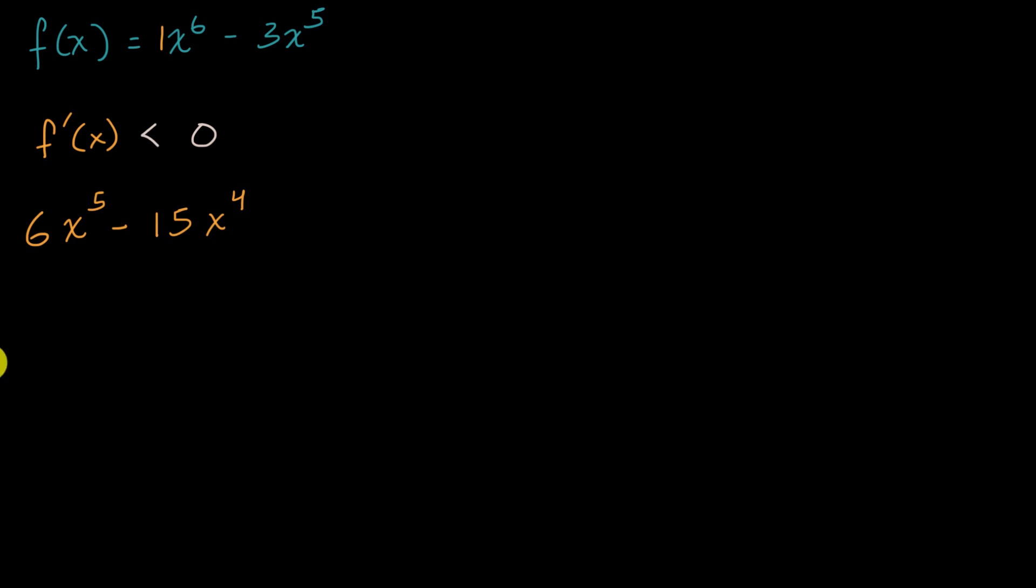And we need to figure out over what intervals is this going to be less than zero. Now let's see how we can simplify this a little bit. Both of these terms are divisible by x to the fourth, and they're both divisible by three. So let's factor out a 3x to the fourth times, you factor out a 3x to the fourth here, you're left with a 2x. And then over here, you have minus 5, has to be less than zero.